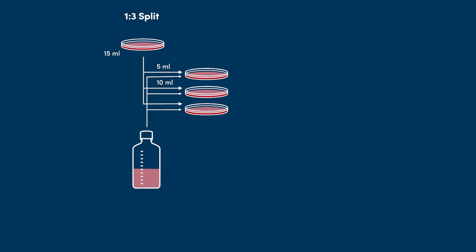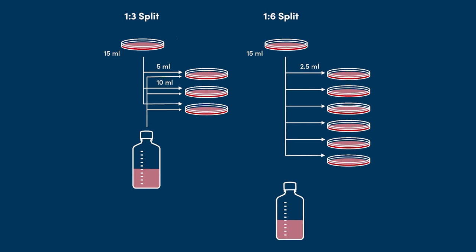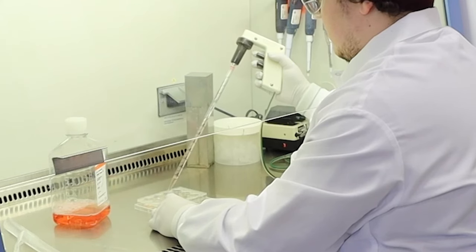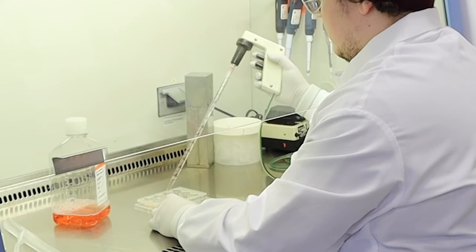To split 1 to 6, you would instead transfer 2.5 mils of suspension to each of 6 vessels and add 12.5 mils of media to each vessel to bring the volume to 15 mils. Note that you may not need to propagate all cells every time you split.